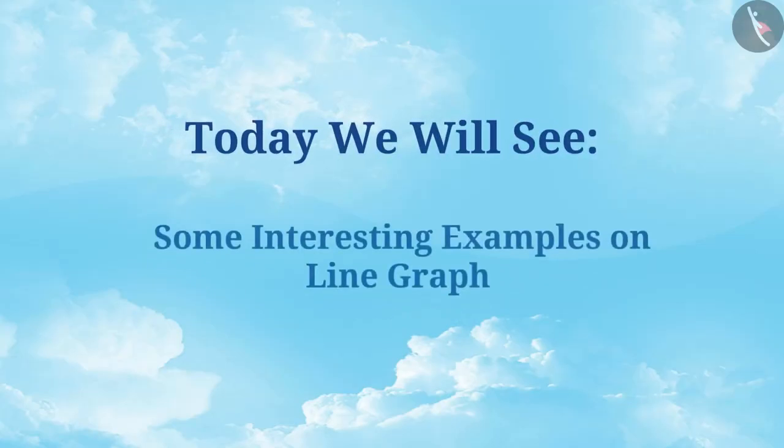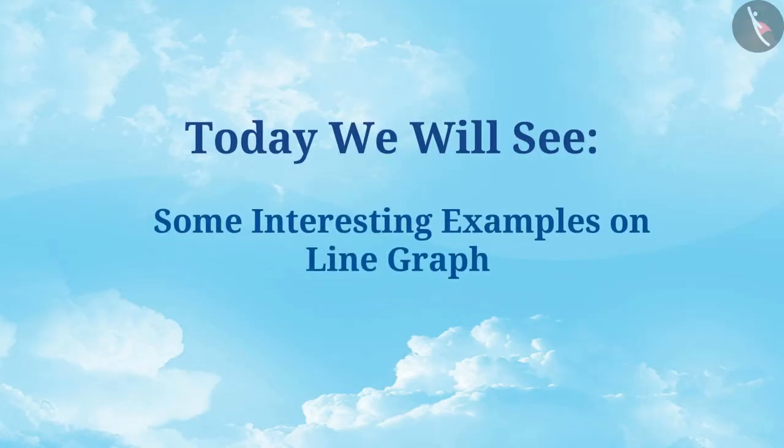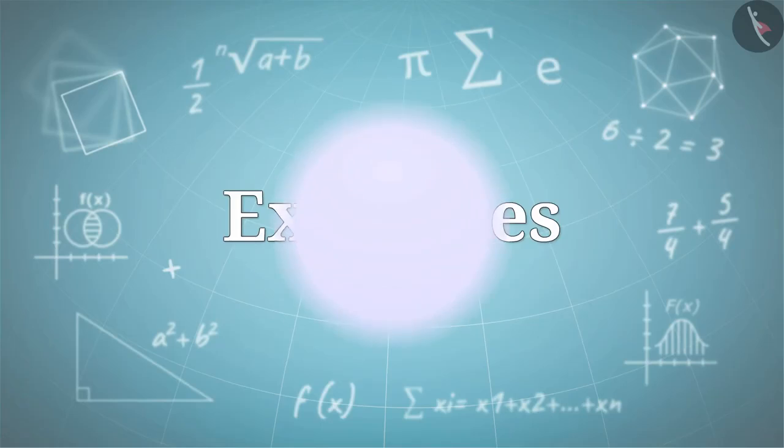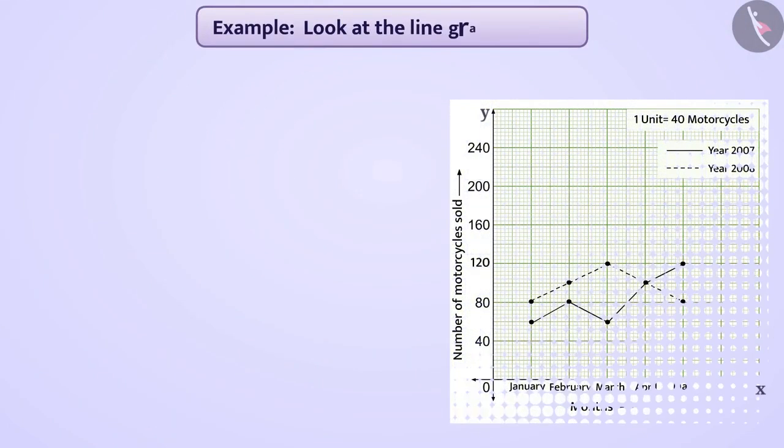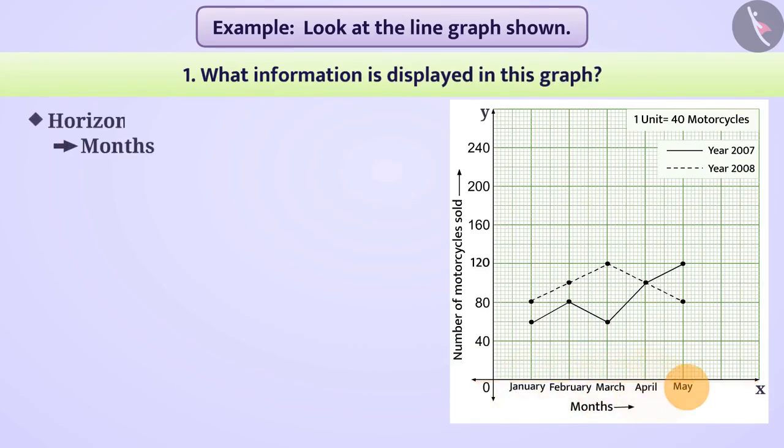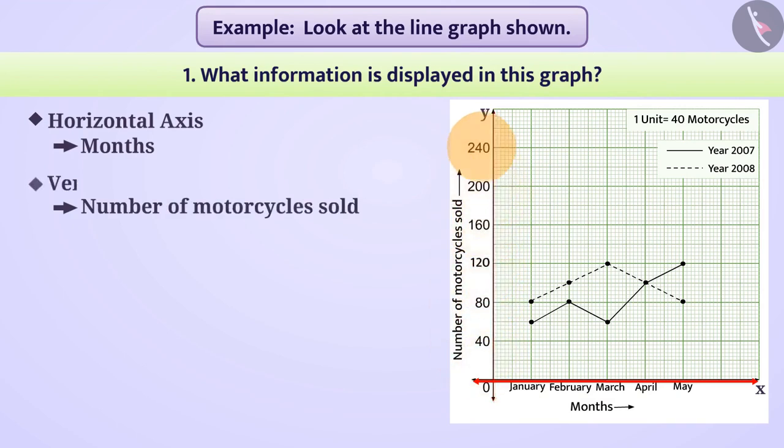Today we will see some interesting examples on line graph. Look at the line graph shown. What information is displayed in this graph? The graph shows the months on the horizontal axis and the number of motorcycles sold on the vertical axis.